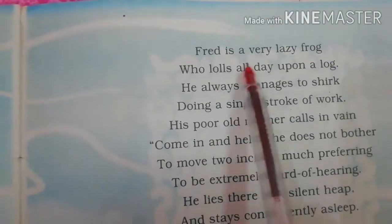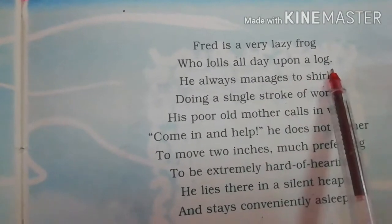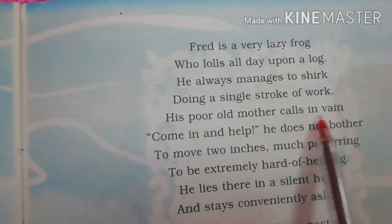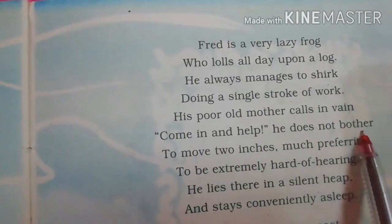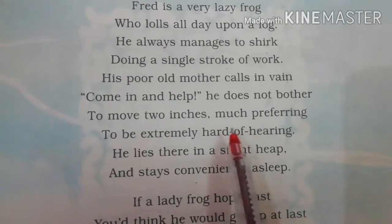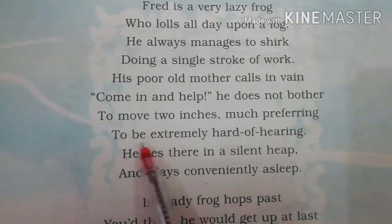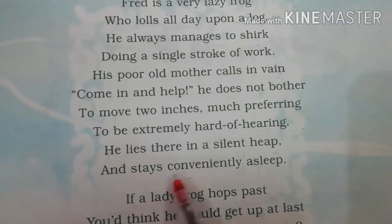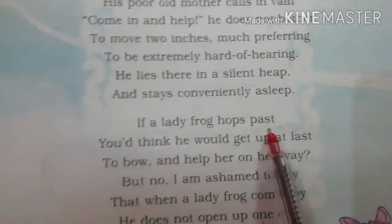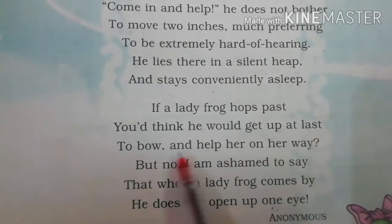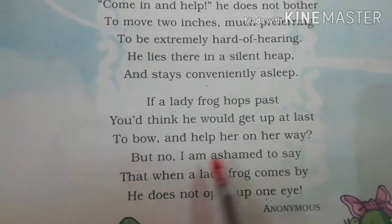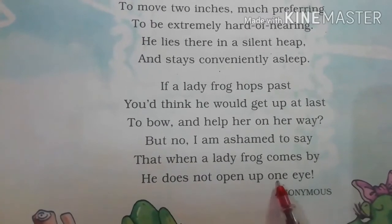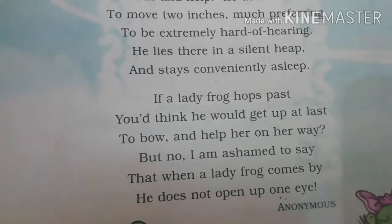Now let's do the reading of this poem again. Fred is a very lazy frog who lolls all day upon a log. He always manages to shrug doing a single stroke of work. His poor old mother calls in vain — 'Come in and help' — he does not bother to move two inches, much preferring to be extremely hard of hearing. He lies there in a silent heap and stays conveniently asleep. If a lady frog hops past, you would think he would get up at last to bow and help her on her way, but no — I am ashamed to say that when a lady frog comes by, he does not open up one eye.